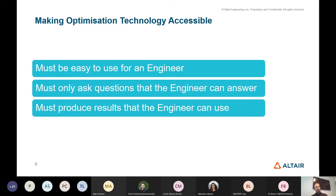One particular important thing is that the optimization technology and software must only ask questions that the engineer can answer. There's no use asking questions related to theoretical understanding they simply don't have. And once you've done your optimization, you need to make sure the end result is actually usable. A lot of optimization technology can produce interesting outcomes from an academic perspective, but if they don't produce something relevant to the real world, engineers aren't going to use it.